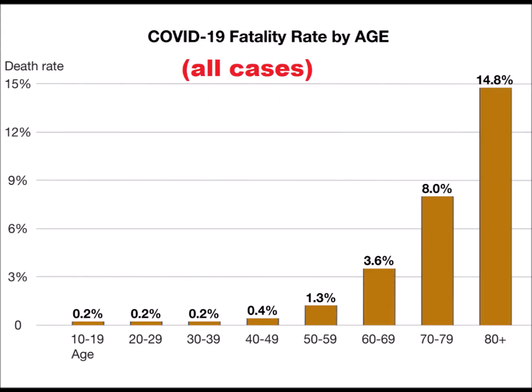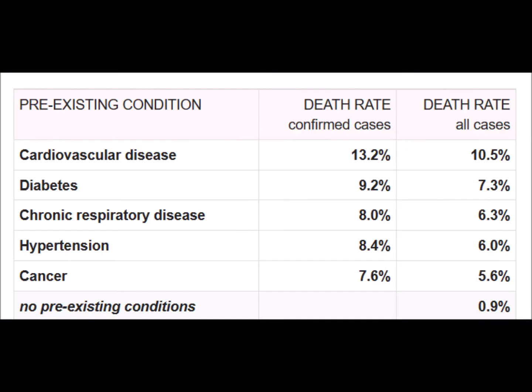This probability also differs depending on the age group. Most of those who died were older patients — about 80% of deaths recorded were from those over the age of 60. This probability also depends on pre-existing health conditions including cardiovascular diseases and diabetes, with about 75% of deaths having pre-existing health conditions.